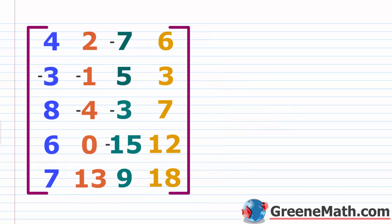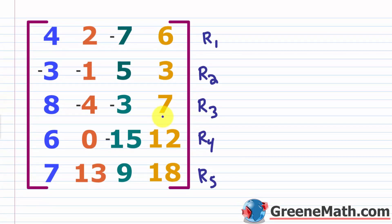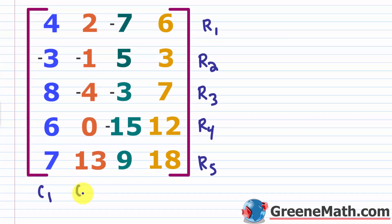In this next example, what would the order be? Going through, I can count rows going across: row 1, row 2, row 3, row 4, row 5 — so 5 rows. Just picture the guy rowing the boat to remember that rows go across. The columns are going up and down, so we have column 1, column 2, column 3, and column 4 — that gives us 4 columns. The rows always come first, so it's a 5 by 4 — the order, or dimensions, of the matrix.